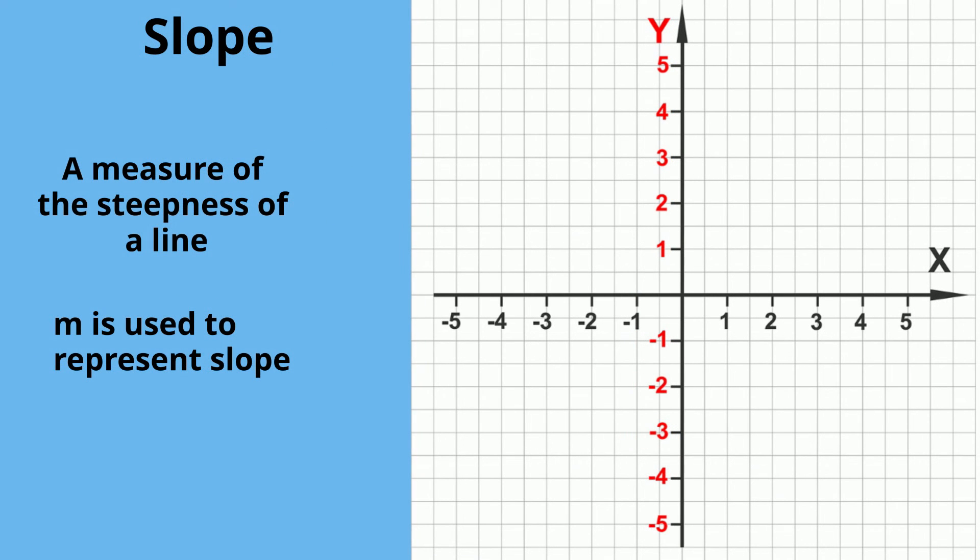So in summary, slope is a measure of the steepness of a line. The greater the slope, the greater the steepness of a line, and the smaller the slope, the smaller the steepness.